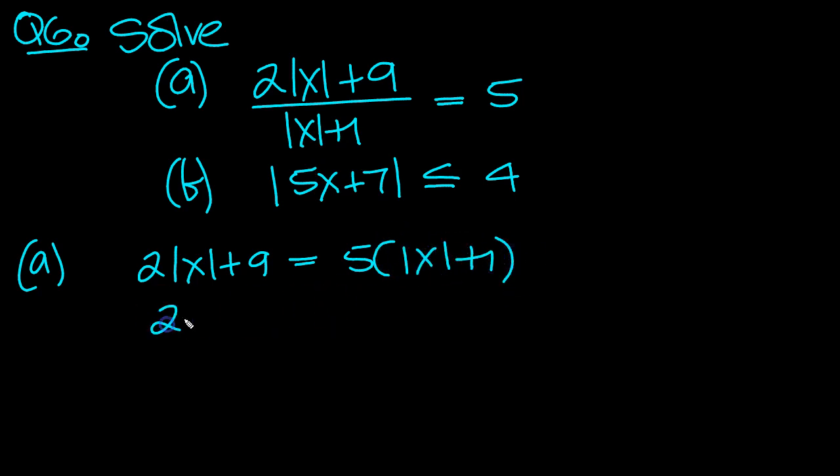And that's equal to 2 modulus x plus 9. Expand the bracket: 5 modulus x, 5 times 1. So move the modulus x over here, the minus 2, and there's 5 already there. So take the 2 and you get 3 modulus x.